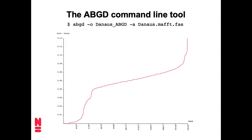There's a command line tool — the ABGD tool — that does this for you. You can run it on aligned FASTA data. I ran it on the aligned data for those butterflies from BOLD, and the output is a directory containing a whole bunch of different output files. This shows the rank order of distances showing that sigmoid curve. In this case, there are very many between-species distances and not a lot within species, apparently — because for a whole bunch of species, there aren't all that many different sequences.